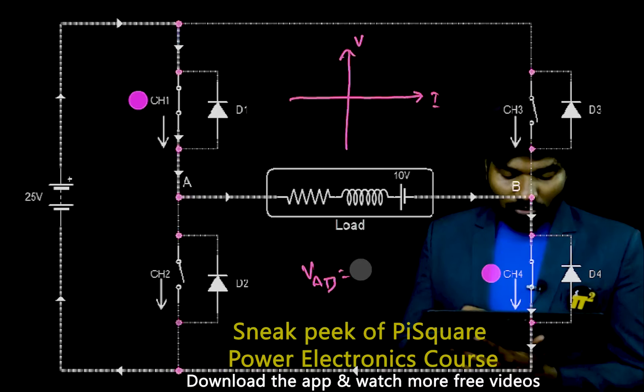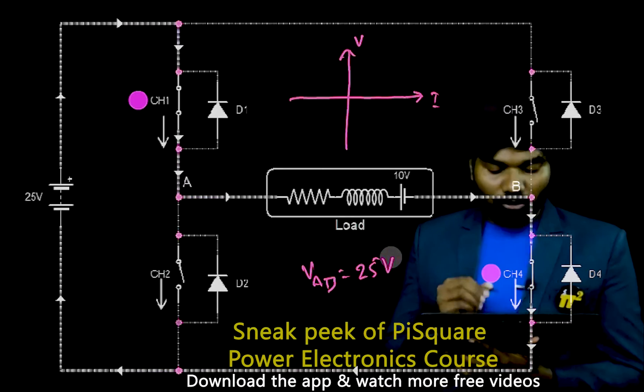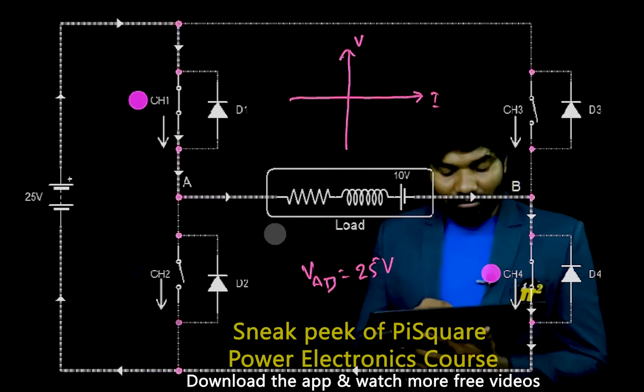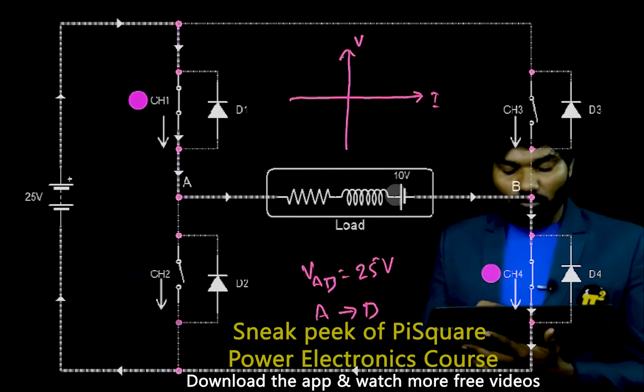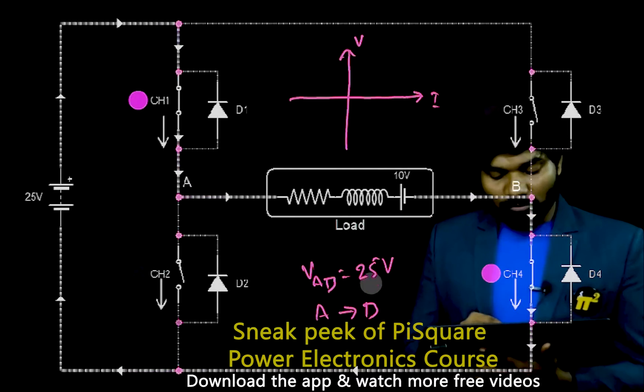So this is 25V. I will be getting 25V here. Current is A to B. Current is flowing from A to B. So this is positive.